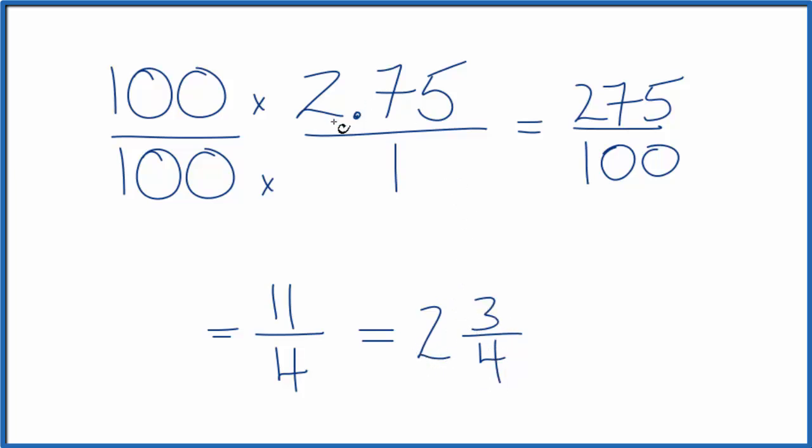So 2.75 is equal to 2 and 3 fourths, or 11 over 4, or 275 over 100. This is Dr. B converting 2.75 to a fraction. Thanks for watching.